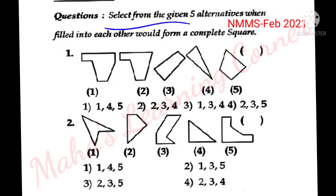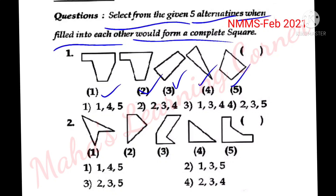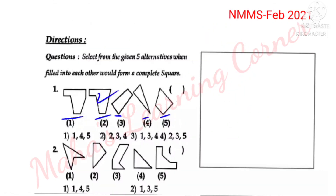Select from the given 5 alternatives which, when filled into each other, would form a complete square. You could open the 5 alternatives to 3 figures. You could open a square. First, we will draw a square. This question is from February 2021.